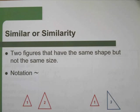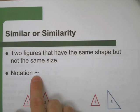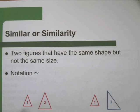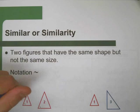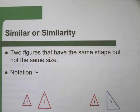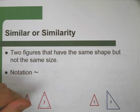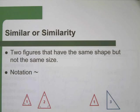Similarity means that we have two figures that have the same shape, but not necessarily the same size. So we have a scaled up or scaled down version of a different shape. And the notation that we use, the way that we write something as similar, is we use a single squiggly line by itself.